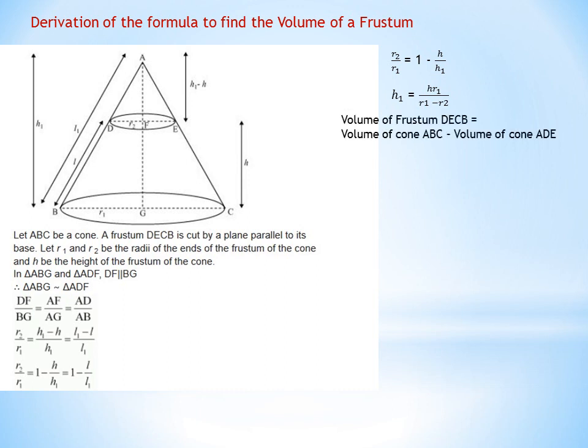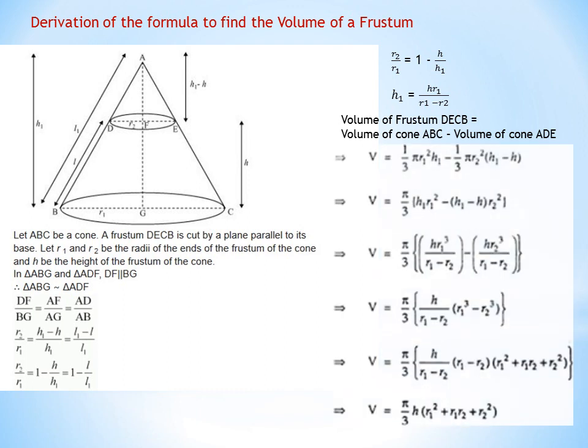The volume of the frustum equals volume of the bigger cone minus volume of the smaller cone: (1/3)π·R1²·H1 − (1/3)π·R2²·(H1−H). Substituting the value of H1, taking LCM, and simplifying, we get π/3 · H/(R1−R2) · (R1³−R2³). Applying the identity A³−B³ = (A−B)(A²+AB+B²), R1−R2 cancels. The volume of the frustum is therefore (1/3)π·H·(R1²+R2²+R1·R2).